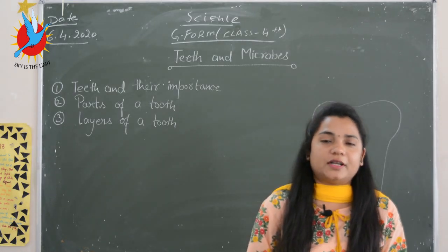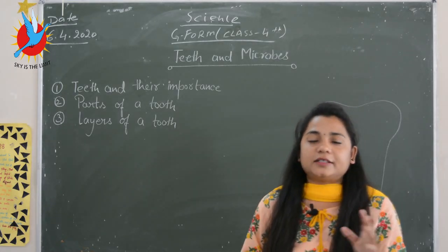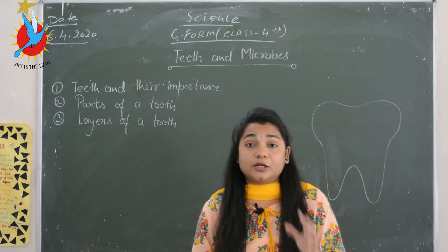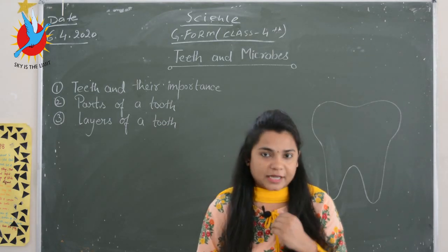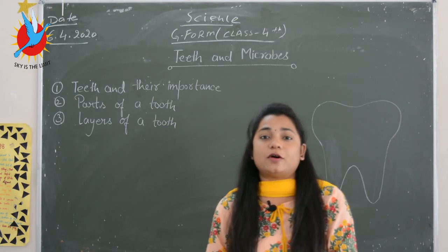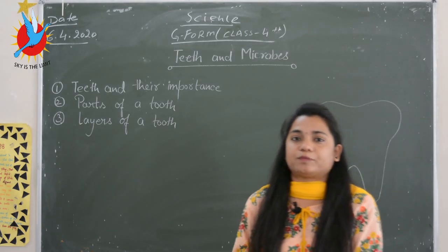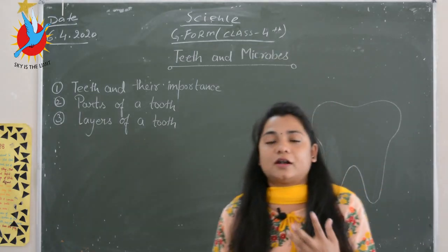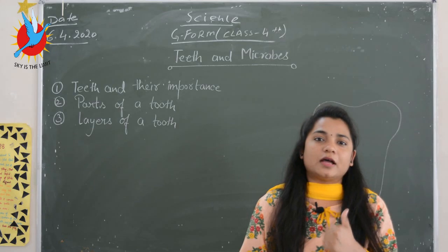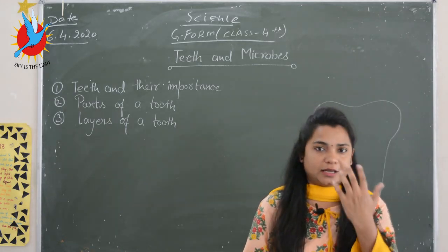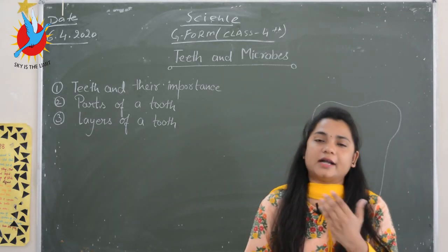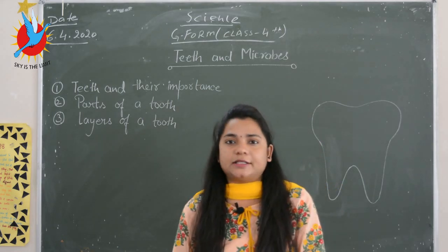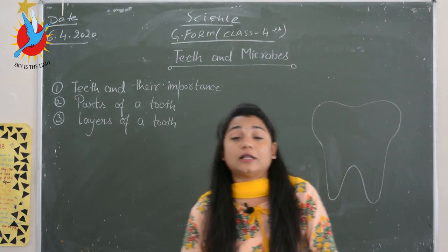The first set of teeth grown in a child is known as temporary teeth or milk teeth. They are 20 in number — 10 in the upper jaw and 10 in the lower jaw. In your mouth there are two jaws: the upper jaw and the lower jaw.